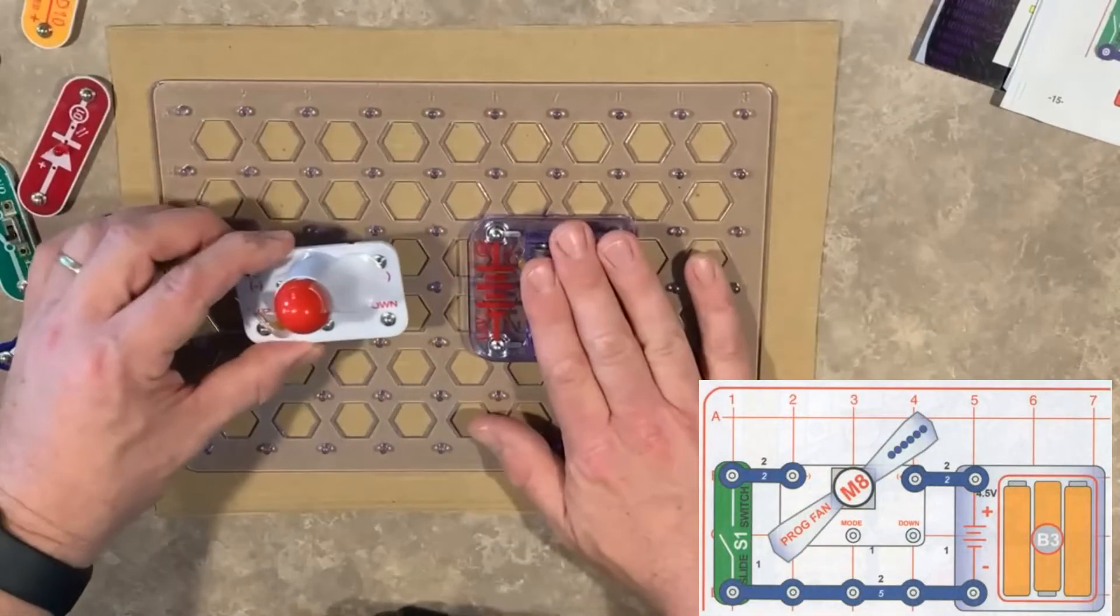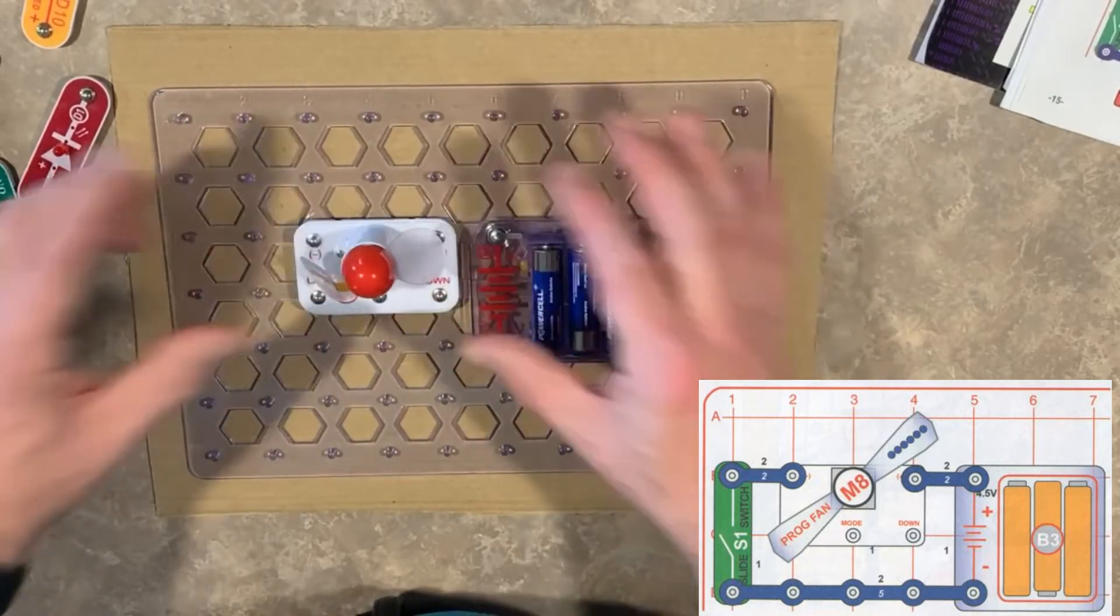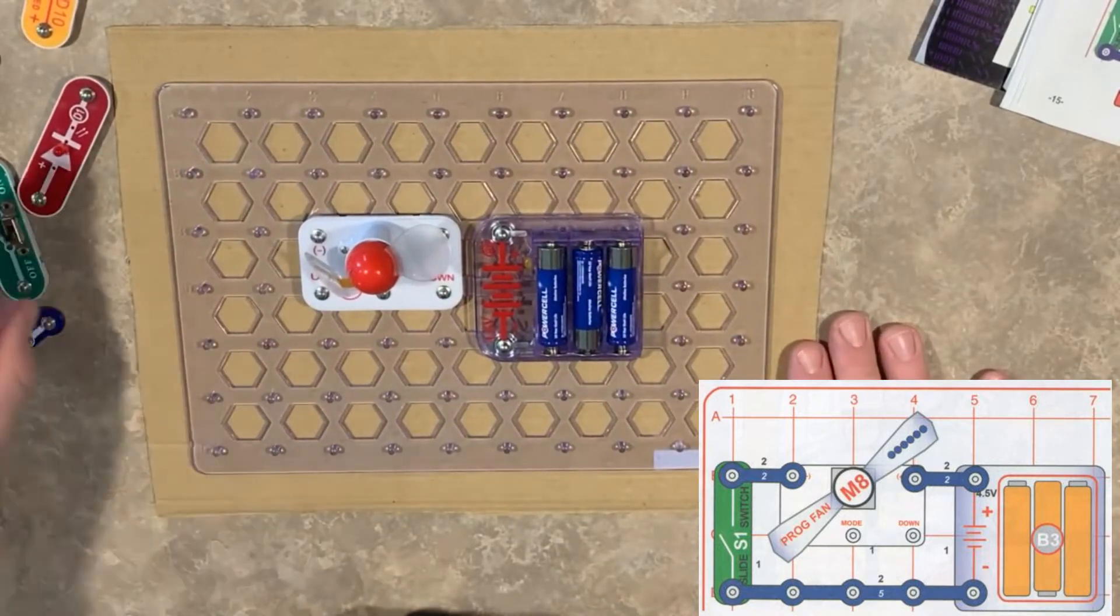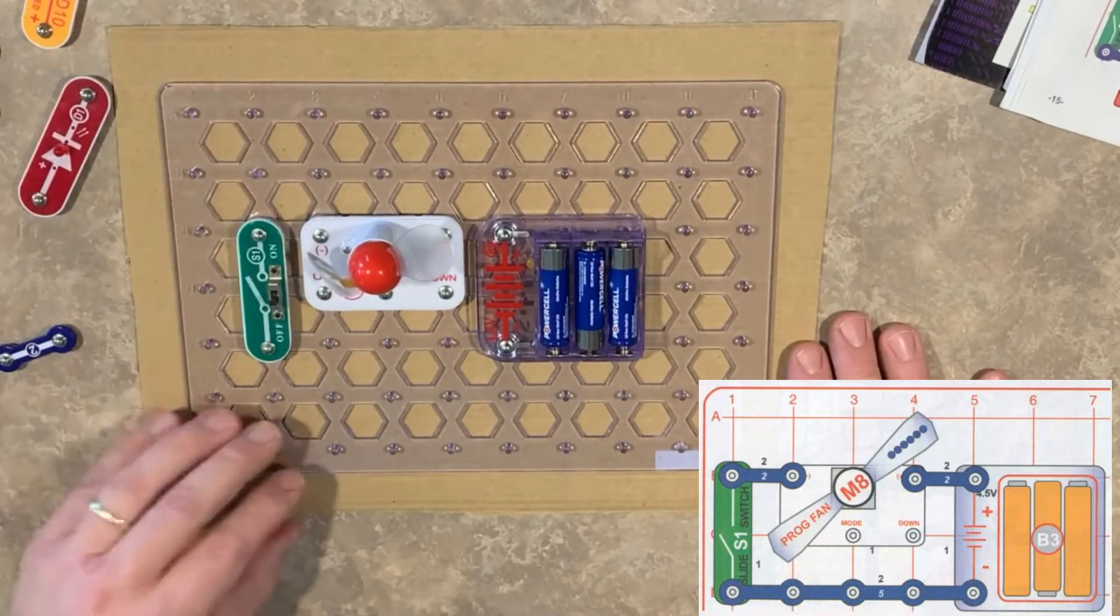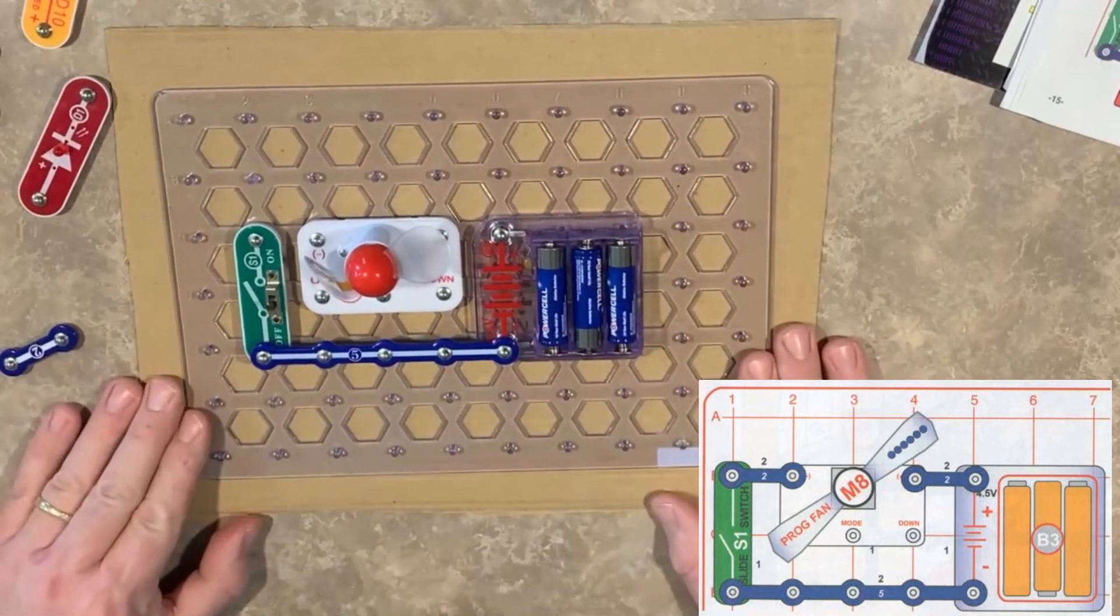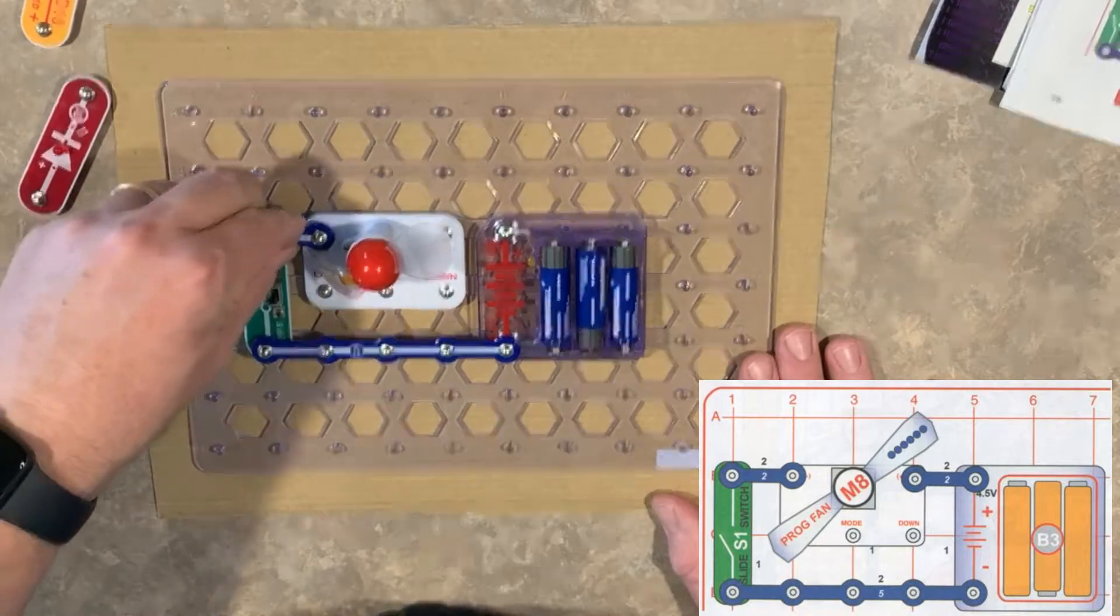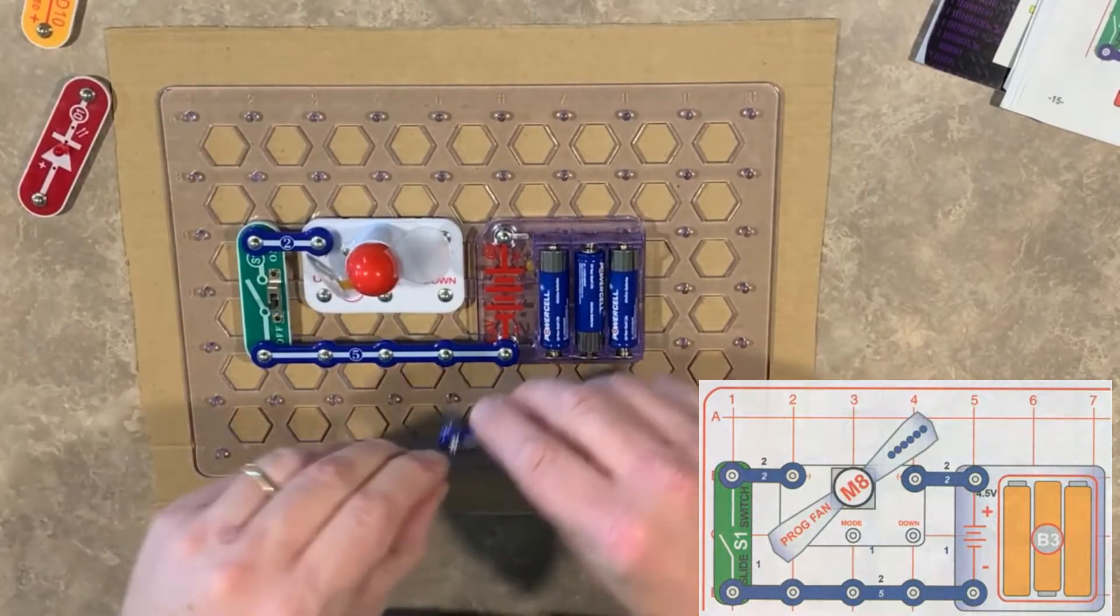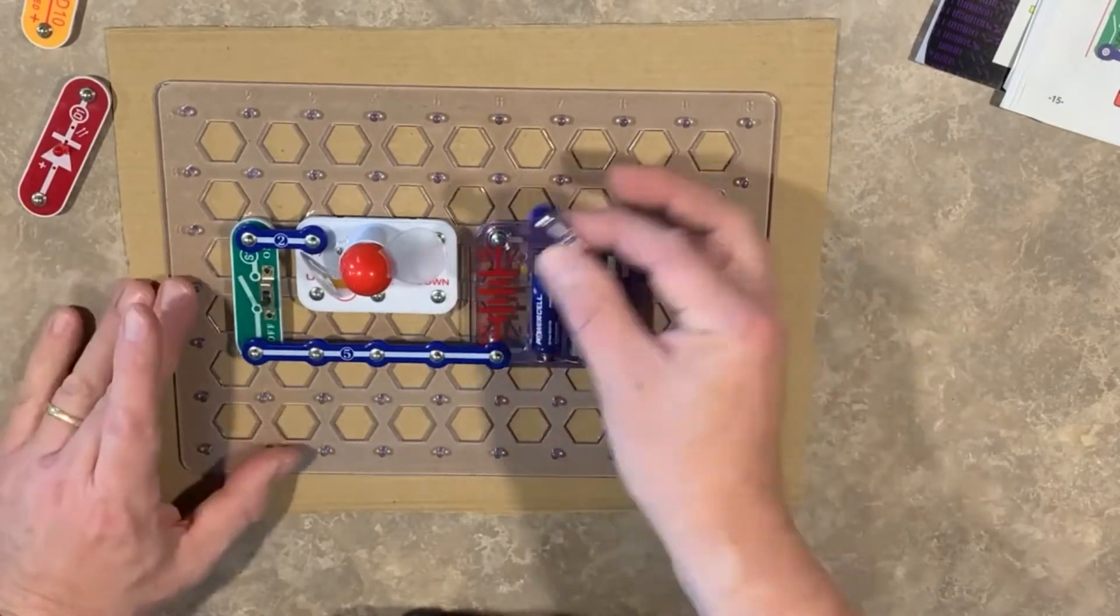All right, so I'm going to put my battery pack in place. I'm going to put the fan in place. I'm going to get my switch right here. I'm going to put a number five right there. And here's my number two. And another number two. I'm going to make sure I always have this turned off for safety before I connect anything.